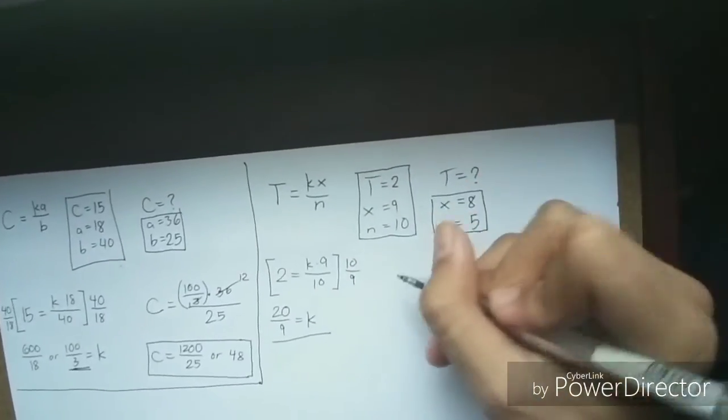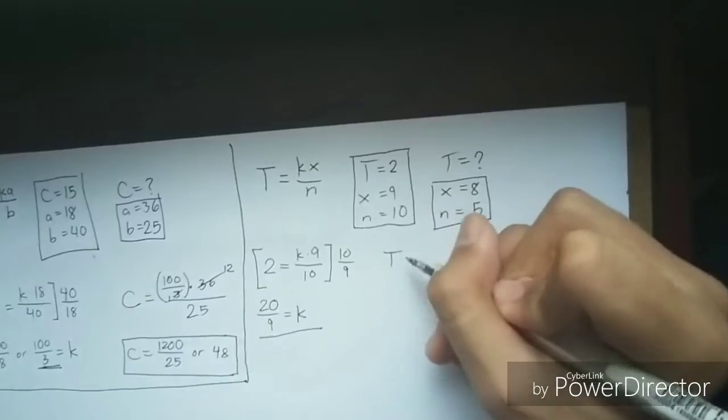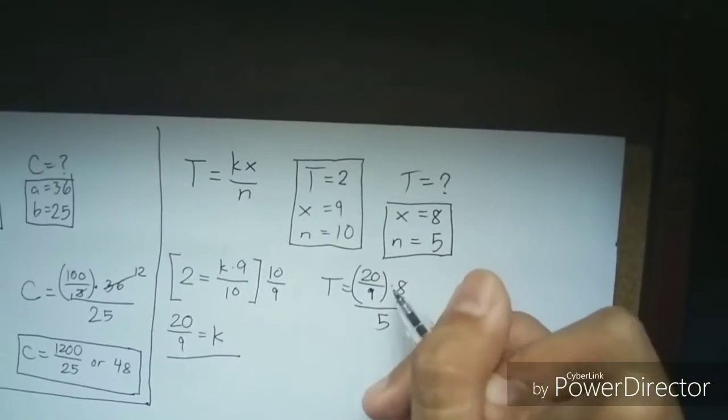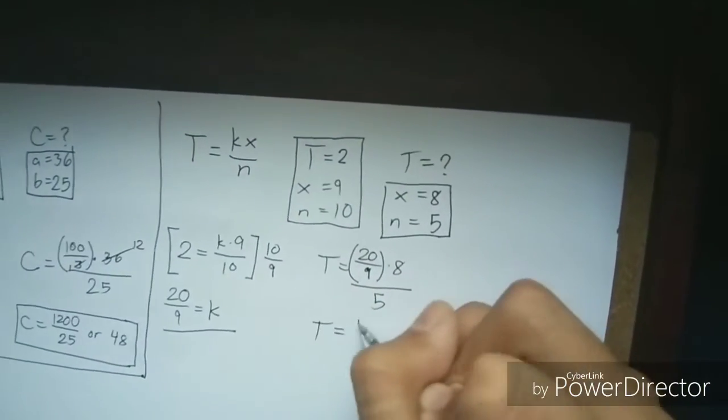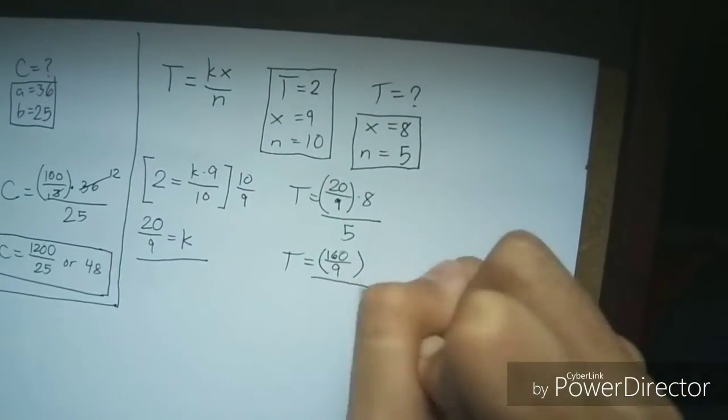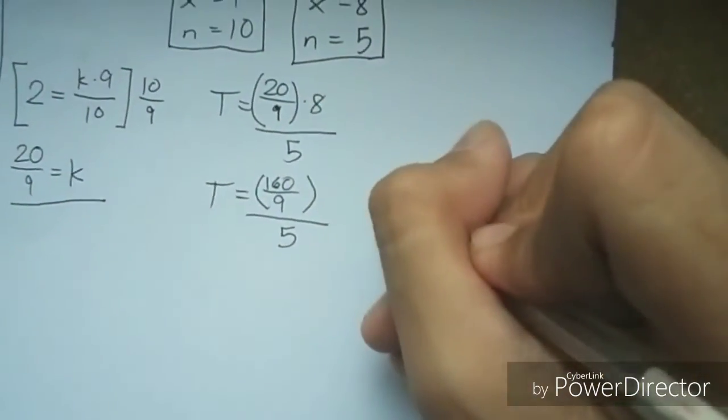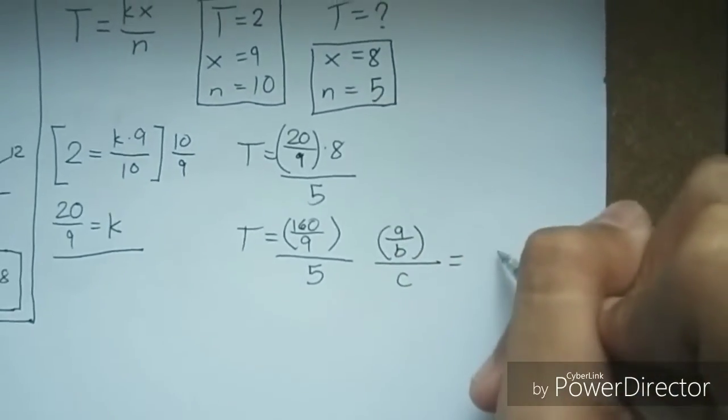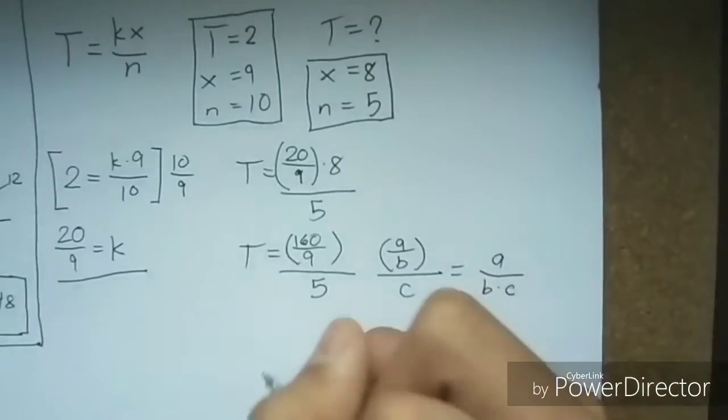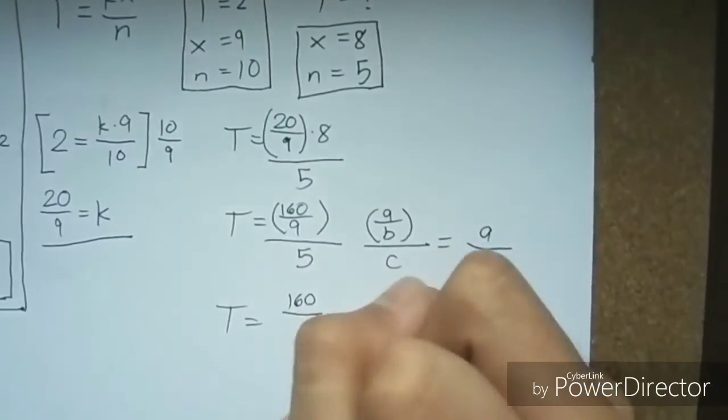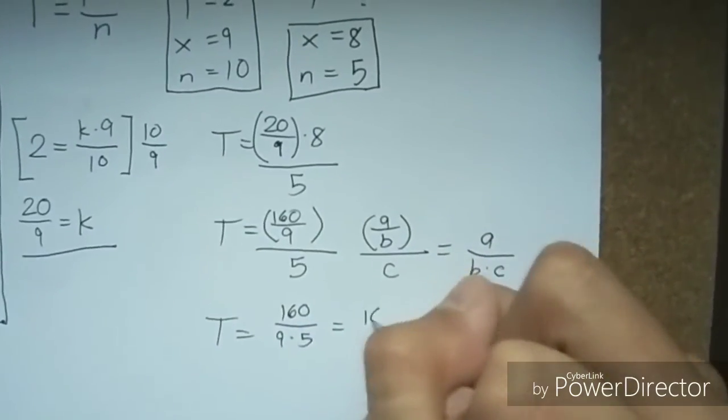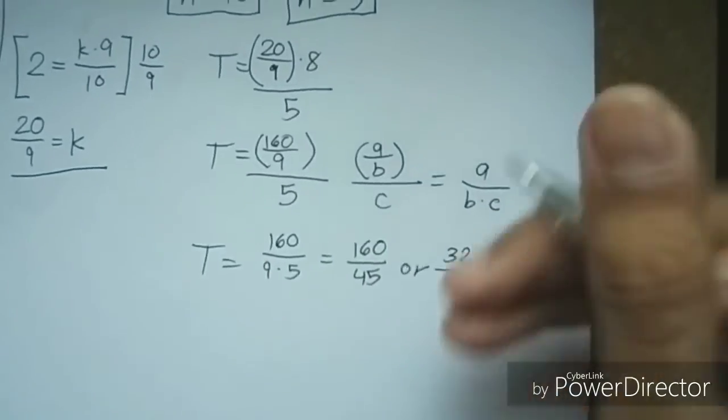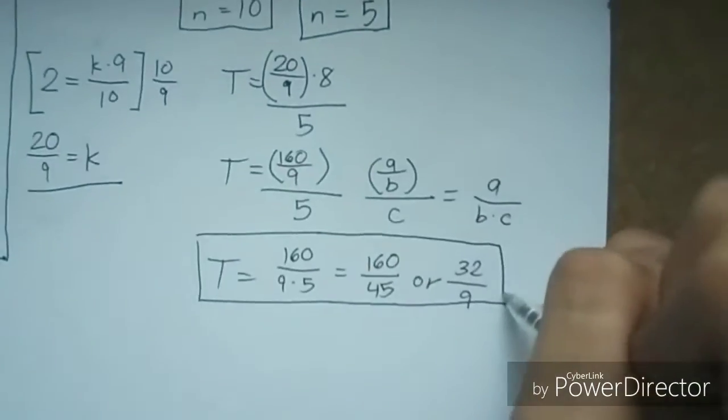Now, we use these as well as 8 and 5 and rewrite the equation like this. There's nothing we can simplify here, which turns it into 160 all over 9 all over 5. In class, we discussed that if you have a fraction A over B all over another number C, you transform that into A over B times C. So this becomes 160 over 9 times 5 or 160 over 45, further simplified as 32 over 9. And this is our answer to the second example.